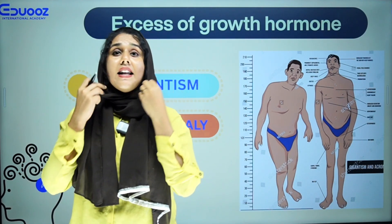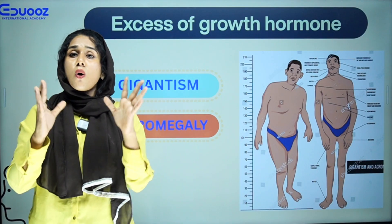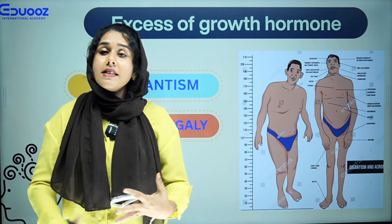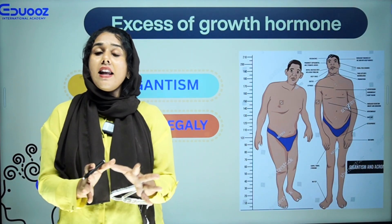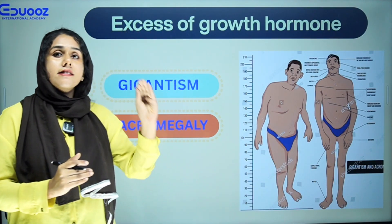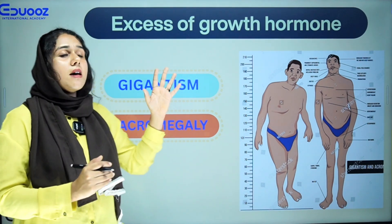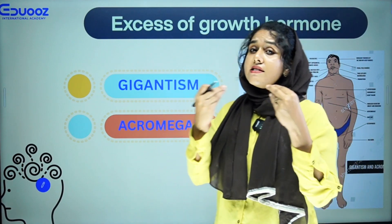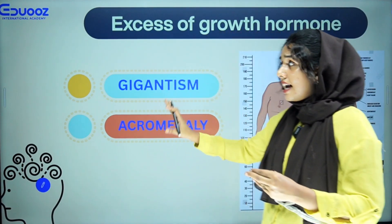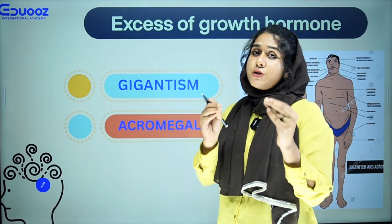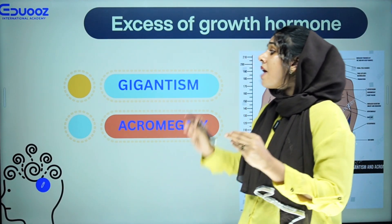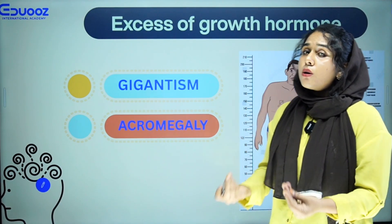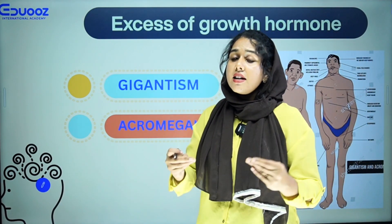First, we will look at the excess of growth hormones, which is secreted by our body. That relates to two disorders: gigantism and acromegaly. In children, we call it gigantism. In adults, we call it acromegaly. So excess of growth hormone is a situational disorder.